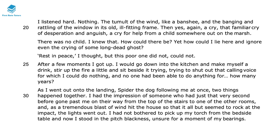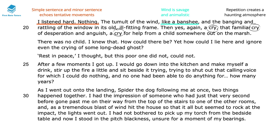This part of the passage really starts to amp up the pressure and the sense of doom. The simple sentence 'I listened hard' as well as the minor sentence 'Nothing' — a sentence without a subject or verb — echo the narrator's own tentative movements. The wind is described in more animalistic terms, this time 'like a banshee,' like a savage creature. There's a repetition of 'cry,' which is also onomatopoeia, and this repetition really creates a haunting atmosphere. There's mention of 'desperation and anguish' — vivid language of pain that the narrator can hear — and he doesn't quite know what it is, which causes further fear within the narrator and within us as readers.